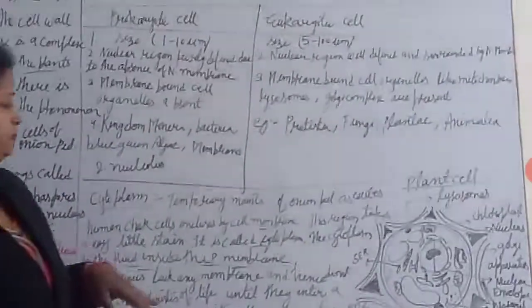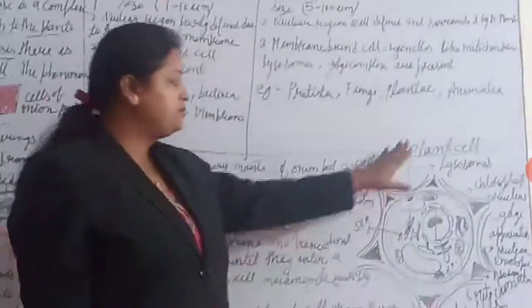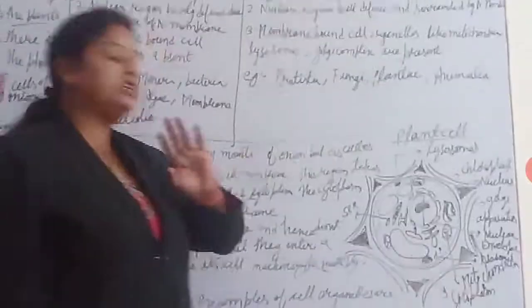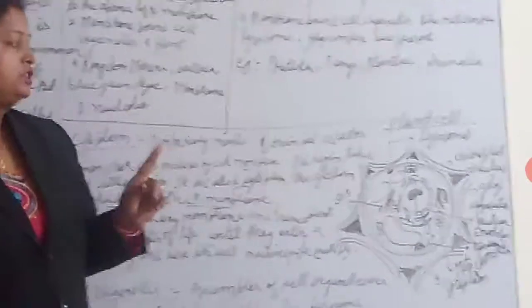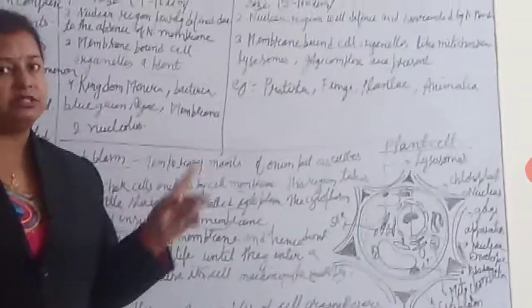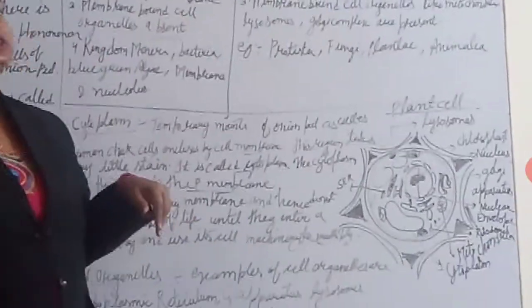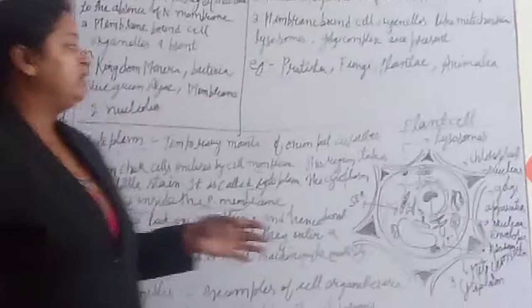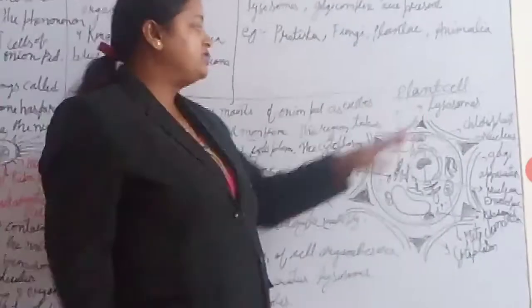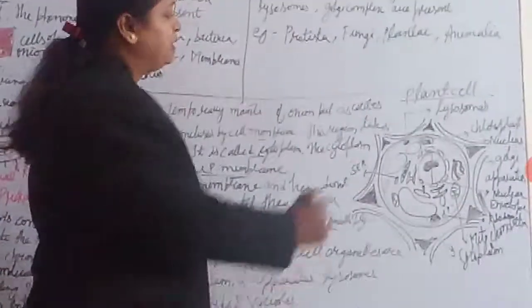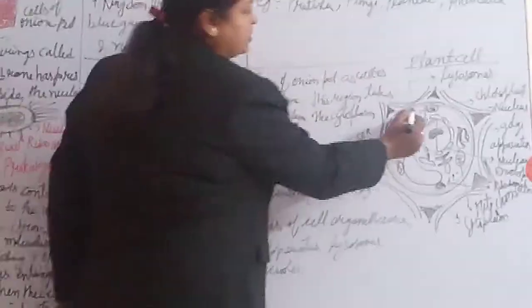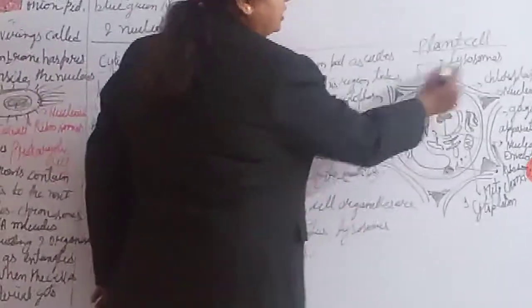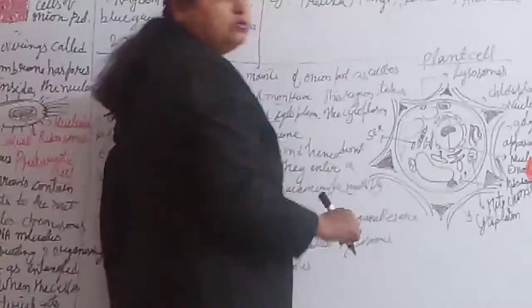Next is cytoplasm. Looking at the plant cell — we have seen this in the previous first part — I have shown all the things. In this plant cell diagram, you can see these structures. Those are called lysosomes.